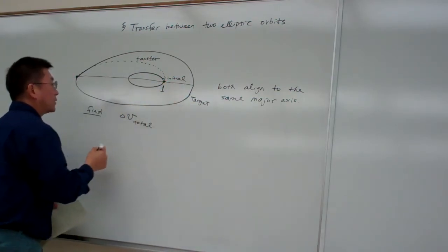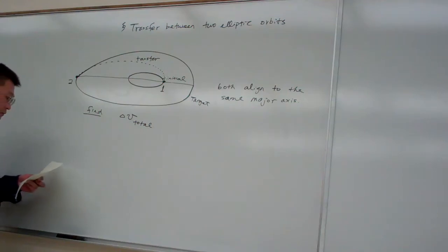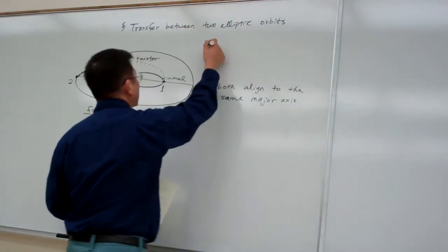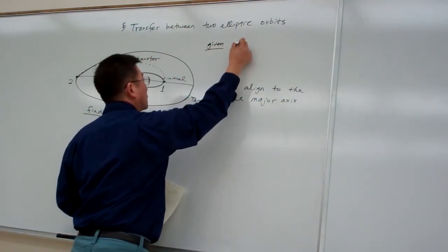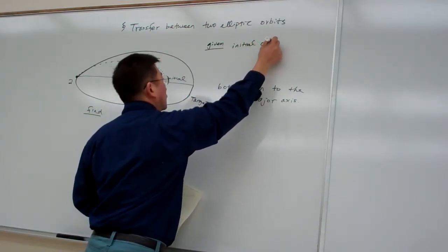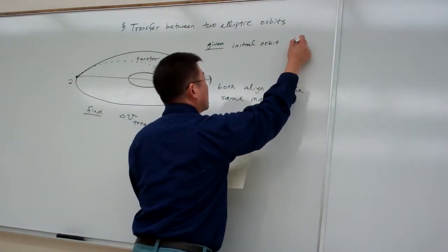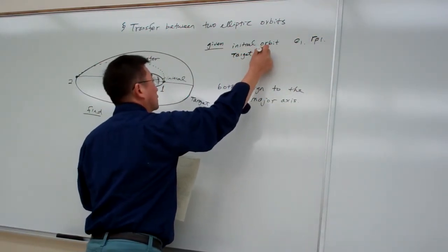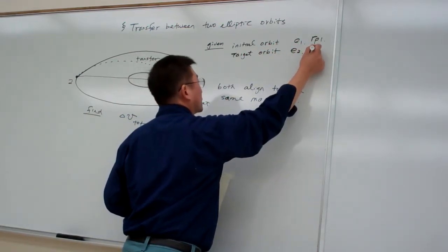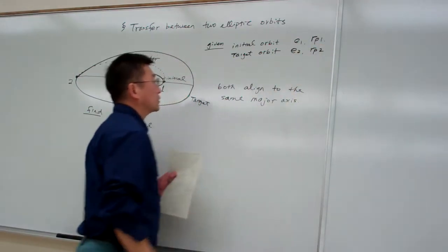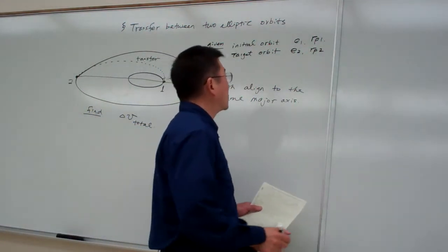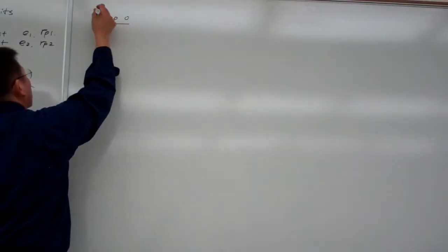Say this is starting point one and this is starting point two. For this case, we are given the initial orbit — we are given E1 and RP1. And for the target orbit, we know E2 and RP2. That is the information we know, and from it we prepare the necessary information.